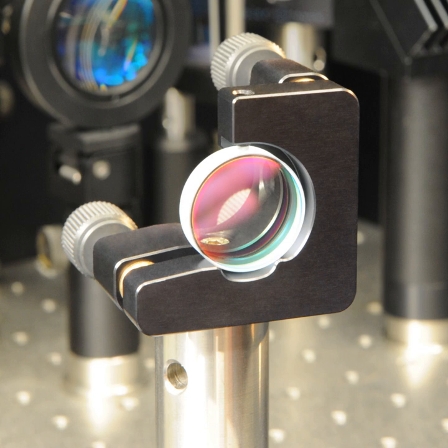A dielectric mirror, also known as a Bragg mirror, is a type of mirror composed of multiple thin layers of dielectric material, typically deposited on a substrate of glass or some other optical material.